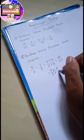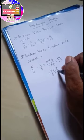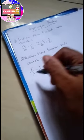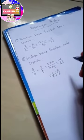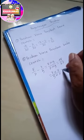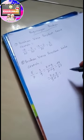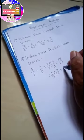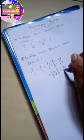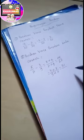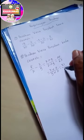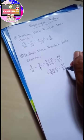9 juga dikali 7. Jadi yang dikalikan adalah pembilangnya. 3 dikali 7 hasilnya? 21. Sedangkan 9 dikali 7 hasilnya? 63.